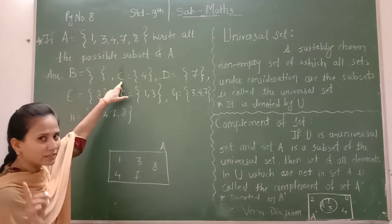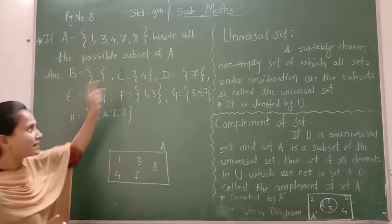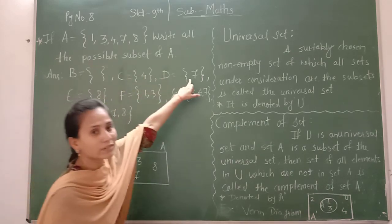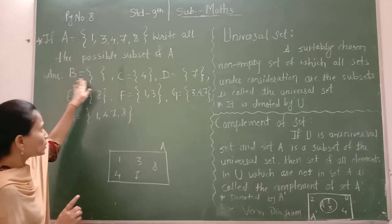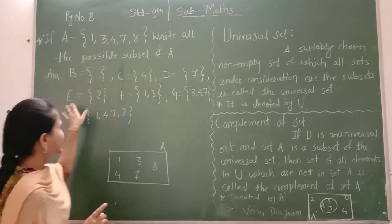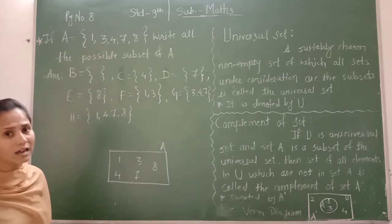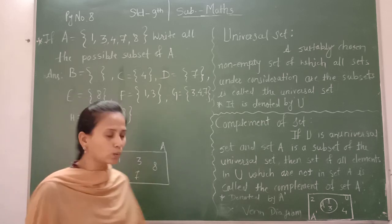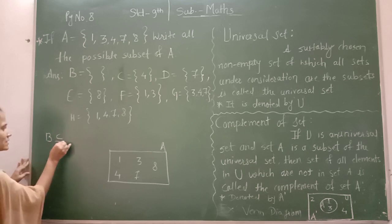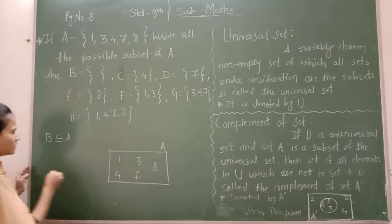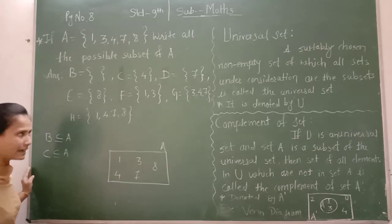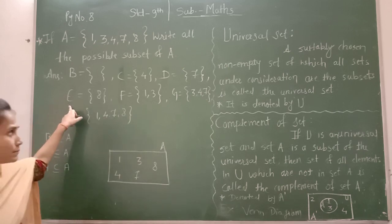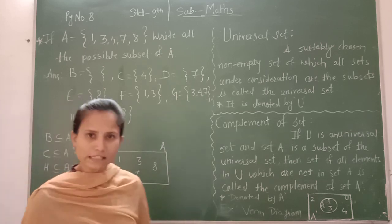You have to give a name to each subset set. So B, C, D, E, F, G, H — these are all subsets of the given set A. If you want to represent them in symbolic form: B ⊆ A, C ⊆ A, and H ⊆ A. All these sets are subsets of set A.